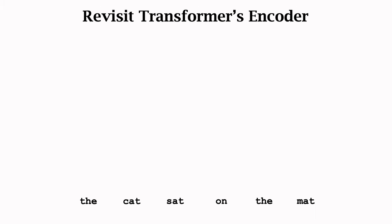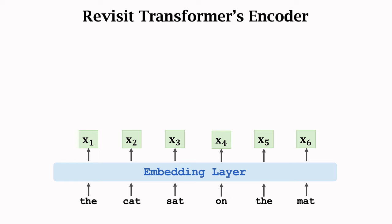The first task is to predict masked words. Let's revisit transformer's encoder network. The input is a sequence of words, for example, the cat sat on the mat. The embedding layer represents every word using a numeric vector x. The embedding is one to one. For example, cat is mapped to vector x2.